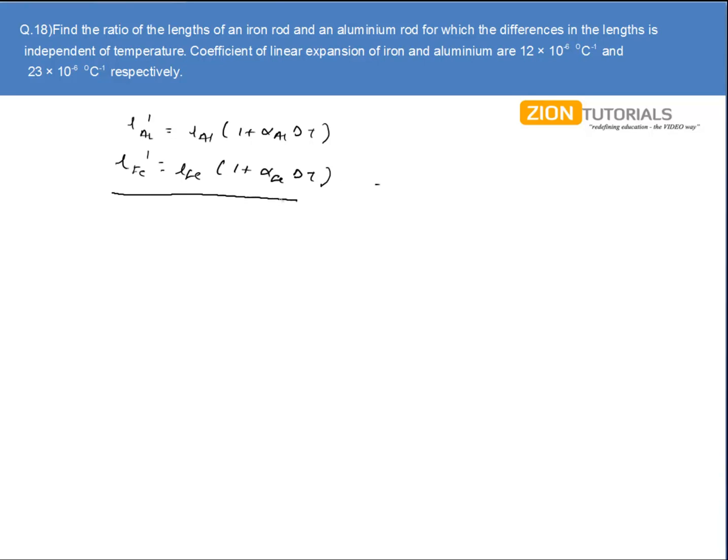I'll subtract these two equations. So I get L'_Al - L'_Fe = L_Al - L_Fe + ΔT(L_Al × α_Al - L_Fe × α_Fe).